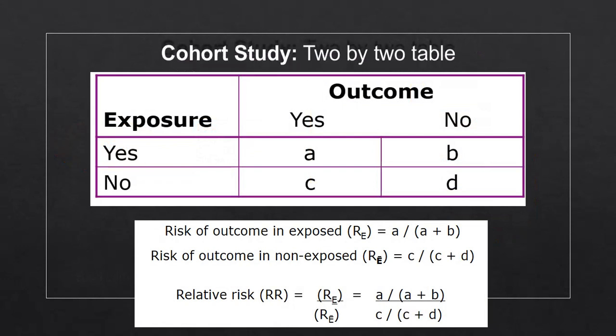So in the cohort study, and particularly the cohort study, we use something called the 2x2 table to get the final relative risk. So you have these equations here, but don't worry, we'll get to it one by one.